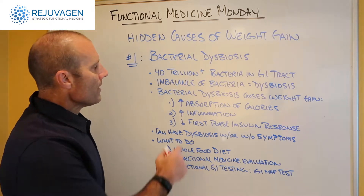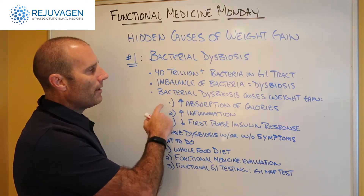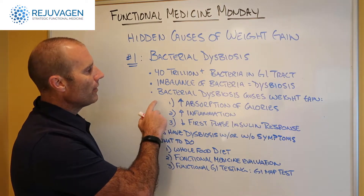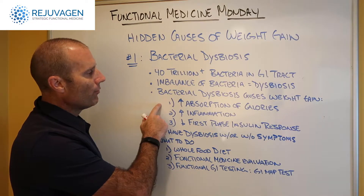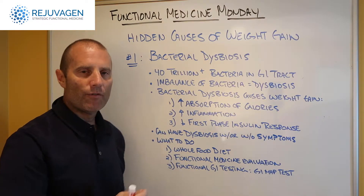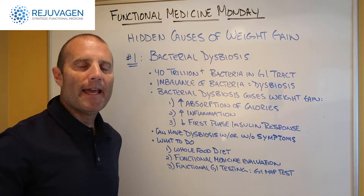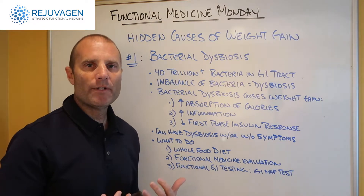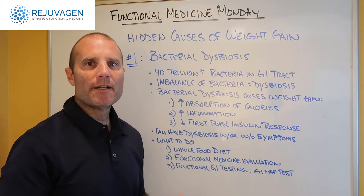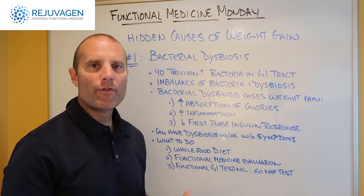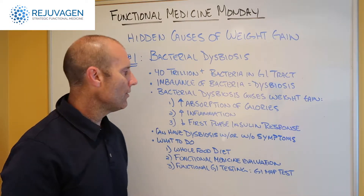Bacterial dysbiosis can cause weight gain by three different ways. The first is the excessive increase of calories that are absorbed because of the overgrowth of the firmicutes family of bacteria.